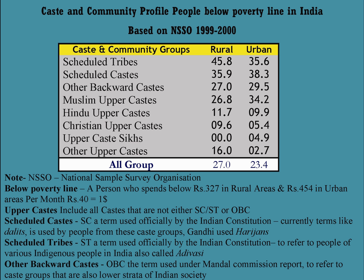Quota systems favouring certain castes and other communities existed before independence in several areas of British India. Demands for various forms of positive discrimination had been made, for example, in 1882 and 1891. Shahu, the Maharaja of the princely state of Kolhapur, introduced reservation in favour of non-Brahmin and backward classes, much of which came into force in 1902.